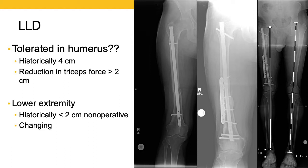Limb length discrepancy can be fairly well tolerated in the upper extremity and may even be an intentional part of the treatment plan for upper extremity fractures. Historically, we felt that up to four centimeters of shortening would be well tolerated in the humerus. But when you look more closely, you're going to experience a reduction in the amount of force that your triceps can generate beyond two centimeters of shortening, so maybe that's not as well tolerated as we thought.